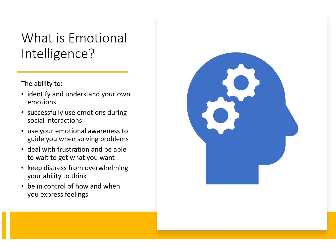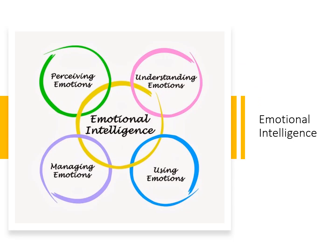Basically, being emotionally intelligent means we can maintain a level of autonomy regarding how and when we express our feelings. There are four key components of emotional intelligence or emotional literacy: perceiving emotions, understanding them, using them, and managing them.